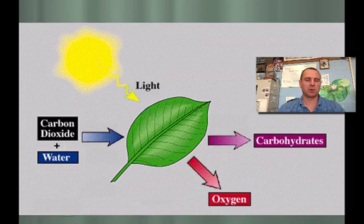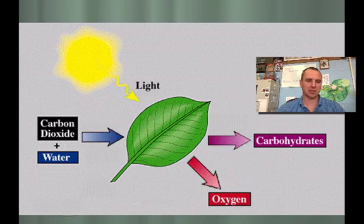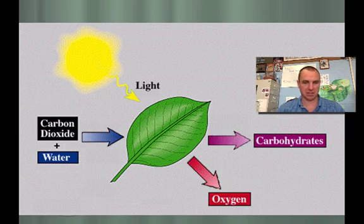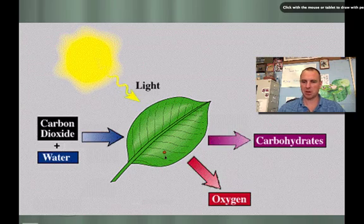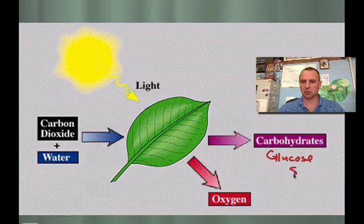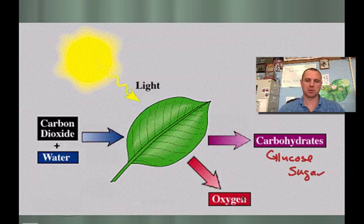Here's a picture form of this: you see light plus carbon dioxide plus water added to the chlorophyll of the leaf that has the enzymes in it to create carbohydrates — which is actually glucose, a sugar — and oxygen. These two things are released.